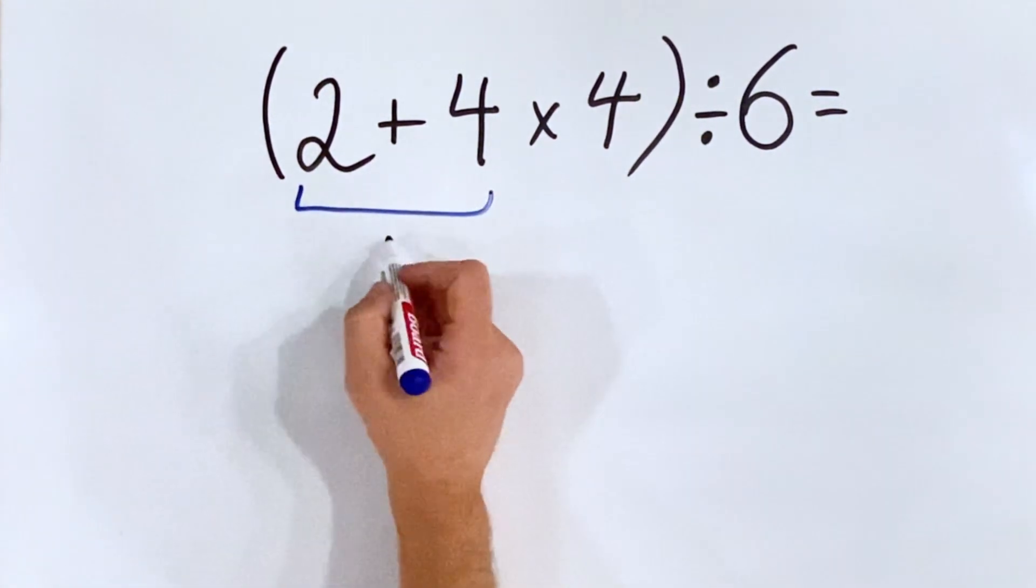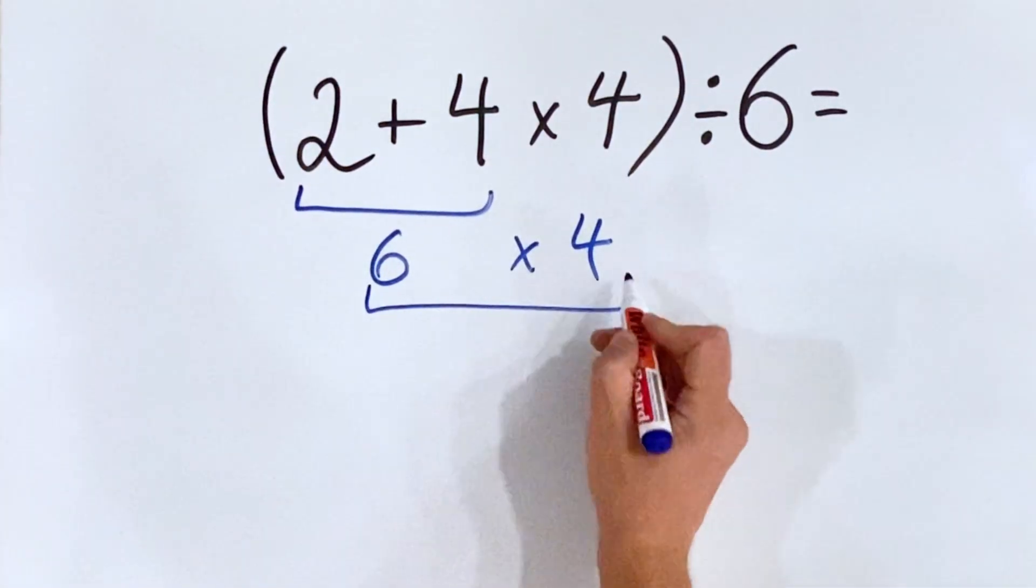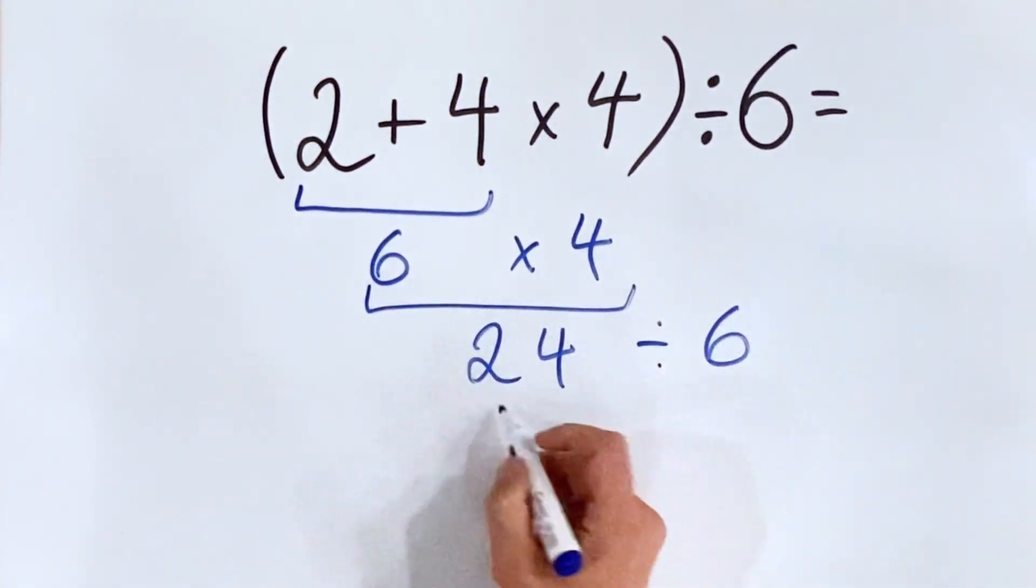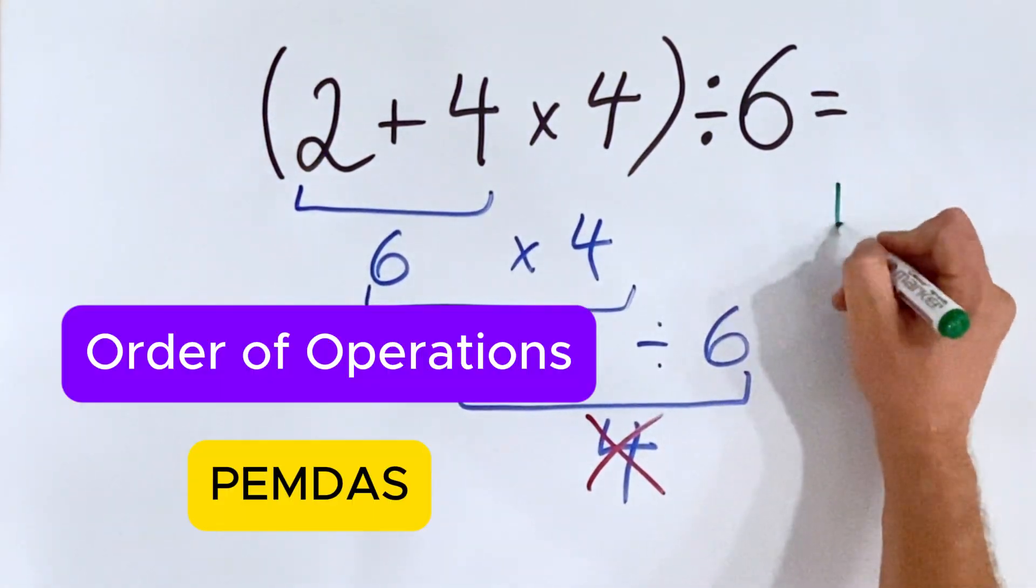t plus four equals six multiplied by four, which equals 24 divided by six, equals four. This answer is not correct because according to the order of operations...